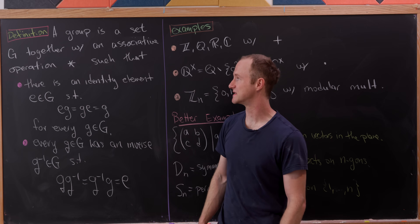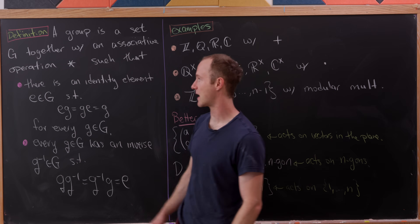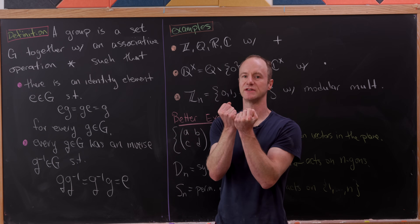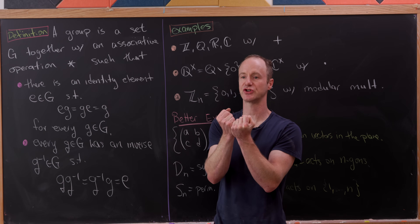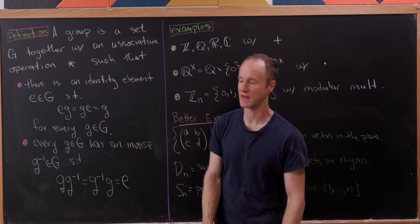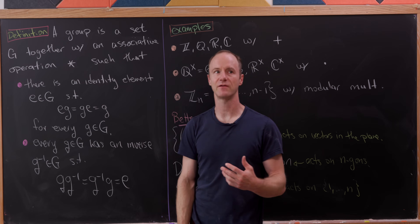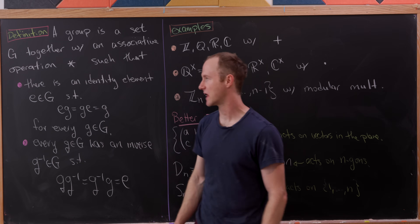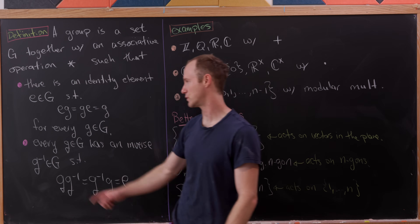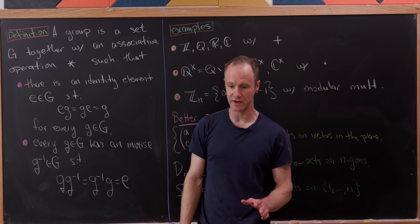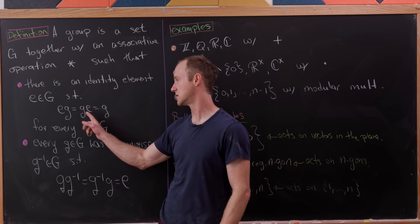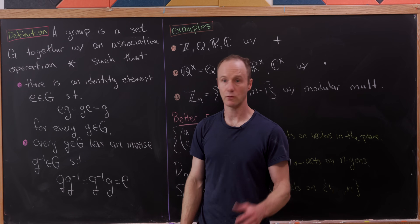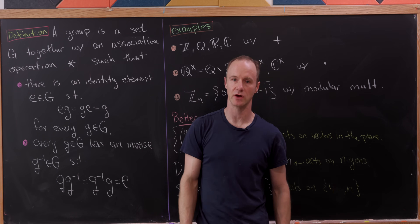A group is a set G together with an associative operation, which we'll call star — though we often don't write the star, just two elements next to each other. There's a special element from G called the identity element, which we'll call E, and it has the property that if you combine it with any group element on either side, you get the group element back.